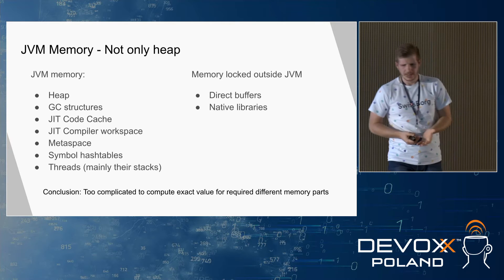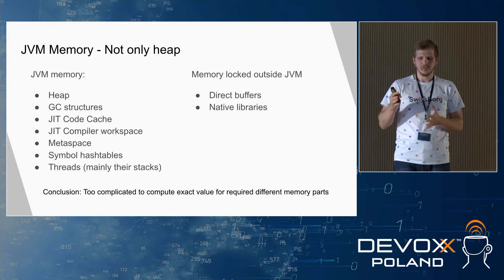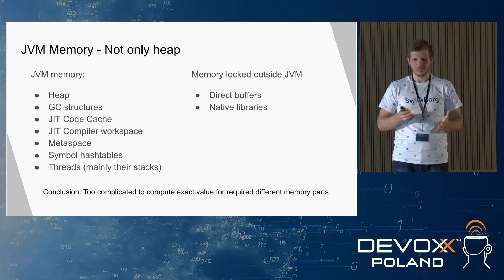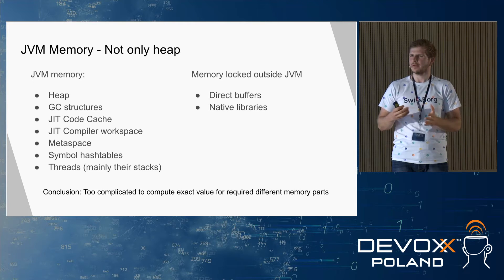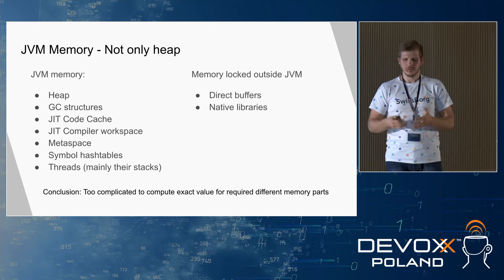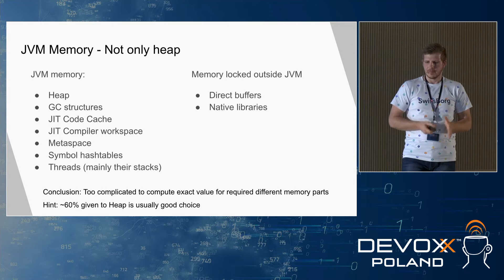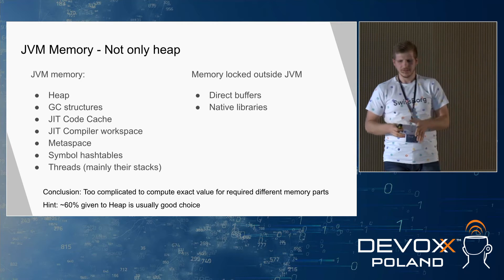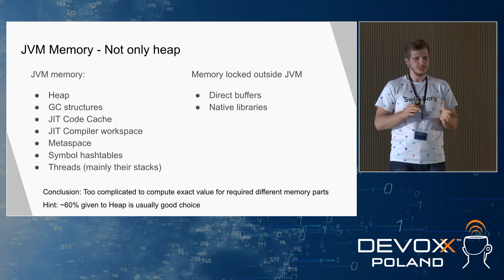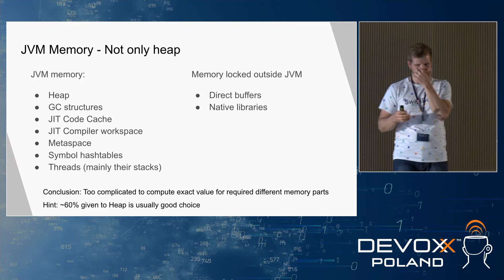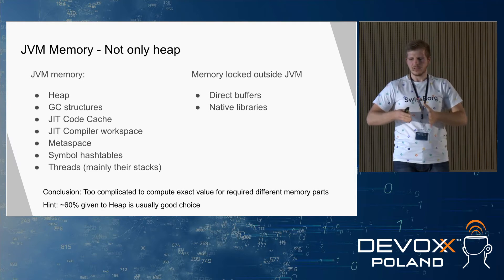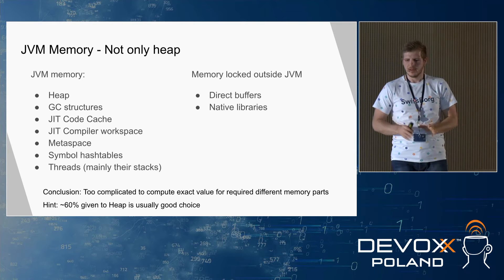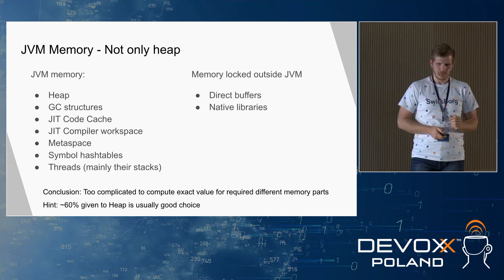The conclusion is that it's too complicated to compute exactly which part takes how much memory, and we need to take an empirical approach. But what I can say: giving the heap 60% of the available memory is a good default choice. We can empirically calibrate it more exactly, but 60% is typically fine.